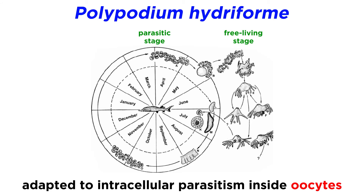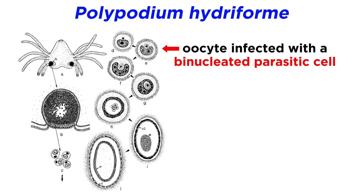A unique cnidarian, Polypodium hydriforme is adapted to intracellular parasitism inside the oocytes, or immature egg cells, of Acipenseriform fish such as sturgeons and paddlefish. Inside the infected oocytes, the binucleated parasitic cell — which has two nuclei, one small and one large — forms a two-cell stage.